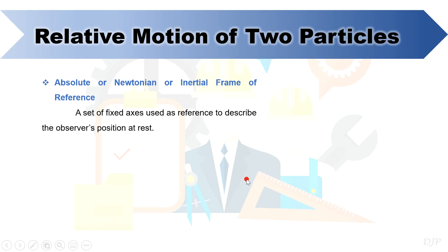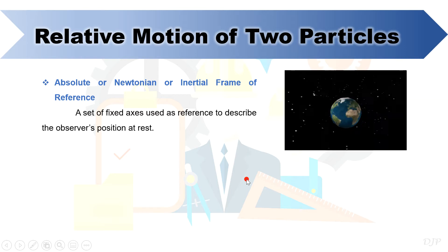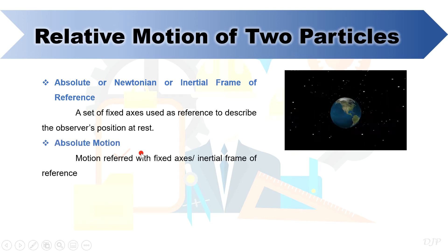For most of the moving bodies, the Earth is regarded as the fixed reference, although Earth itself is moving. This fixed reference is what we call absolute or Newtonian or inertial frame of reference.